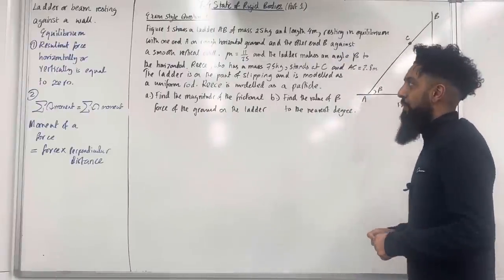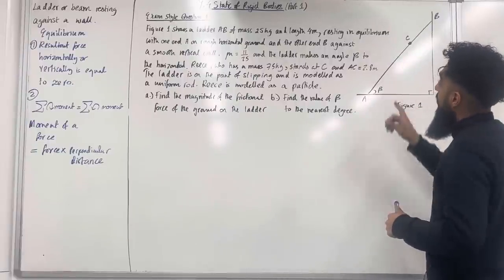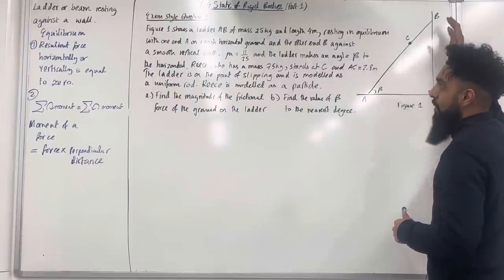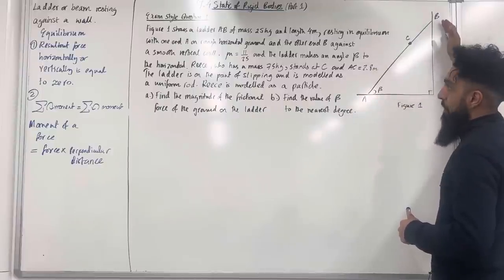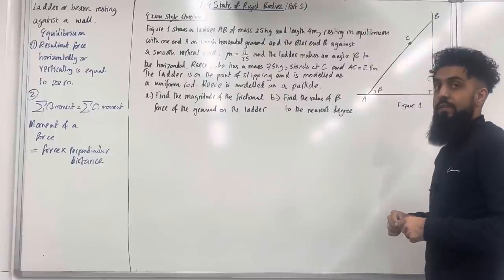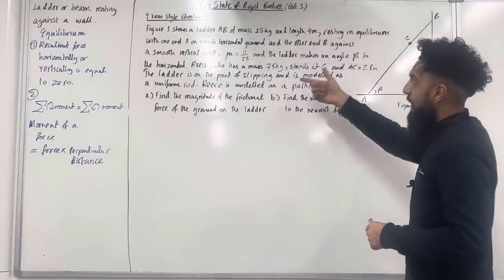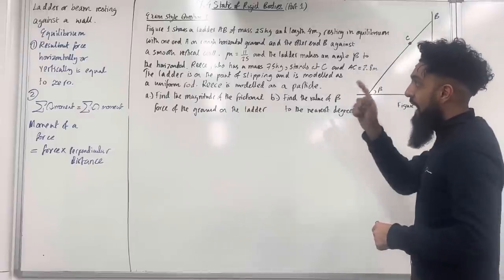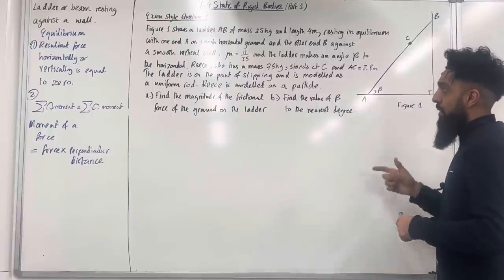Here is exam style question 1. Figure 1 shows a ladder AB of mass 25 kg and length 4 metres resting in equilibrium with one end A on a rough horizontal ground and the other end B against a smooth vertical wall. So there will be friction at A and no friction at B. The coefficient of friction at point A is μ = 11/25 and the ladder makes an angle of beta to the horizontal. Reese, who has a mass of 75 kg, stands at C where AC = 2.8 metres. The ladder is on the point of slipping and is modelled as a uniform rod; Reese is modelled as a particle.